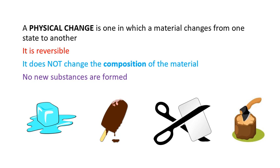When you have a large piece of paper and you want to tear it or cut it with scissors, it is still paper. Nothing new is being formed and the composition is not changing. Also, if you have a piece of wood and you break it into two pieces, it will still be wood. Nothing new is being formed. It is a physical change.